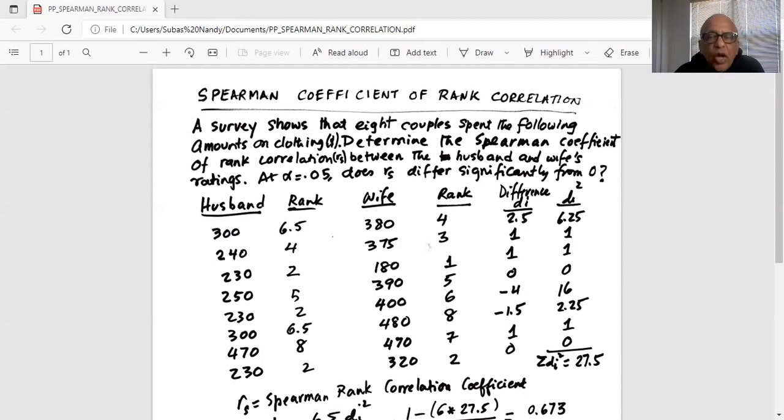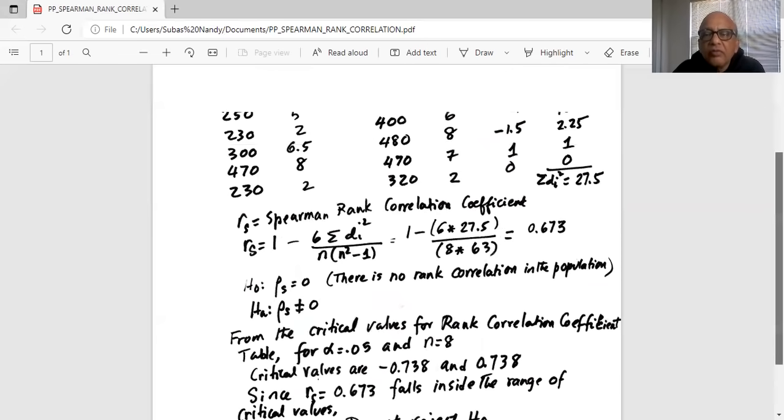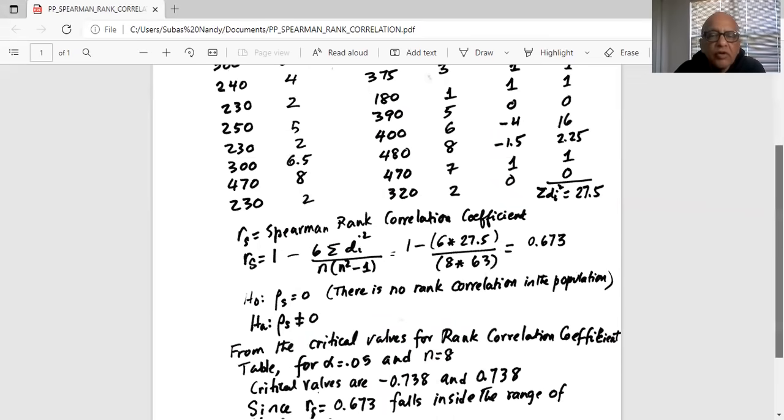Then we take the square of the differences. So 2.5 square is 6.25. One square is 1 and so forth. Minus 4 square is minus 4 times minus 4 is 16. Similarly, minus 1.5 square is 2.25. Then we find the sum of the squares in the difference, sum of the squares in difference of the ranks as 27.5.